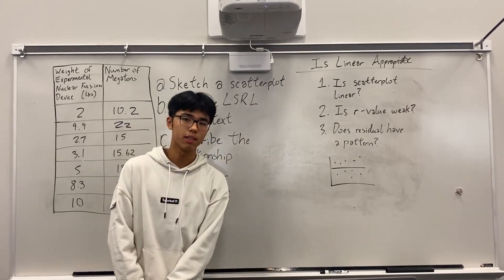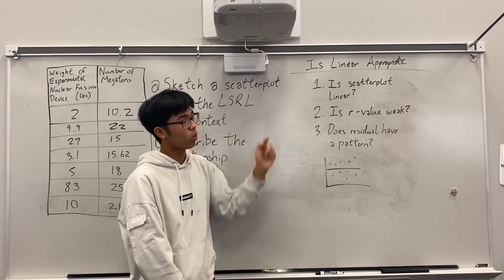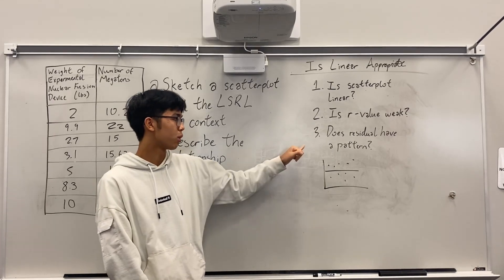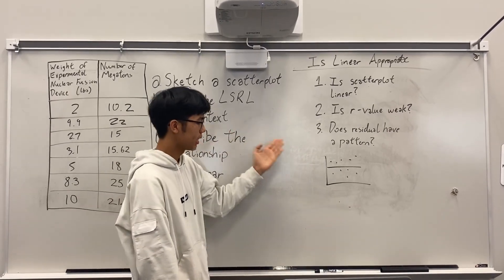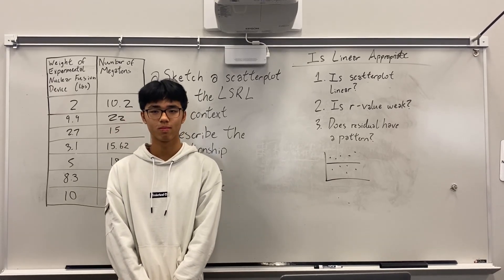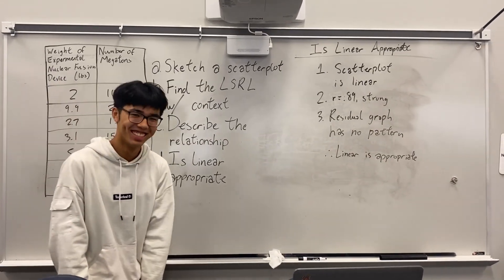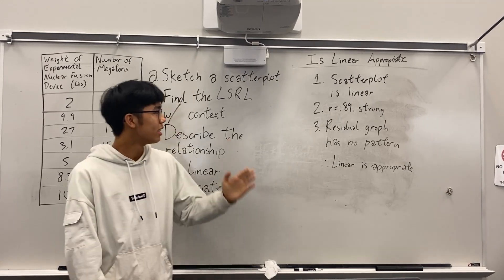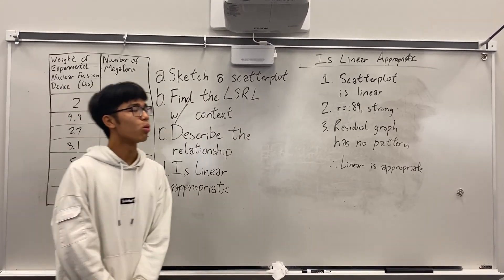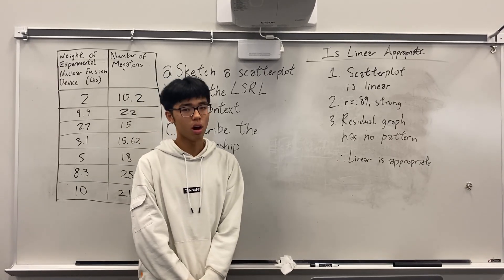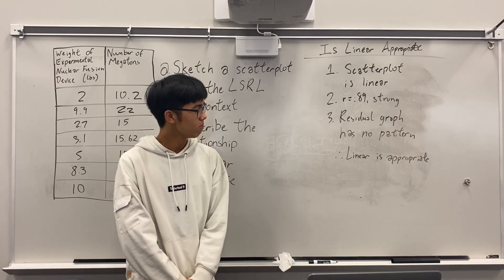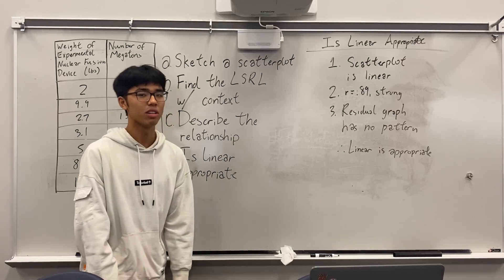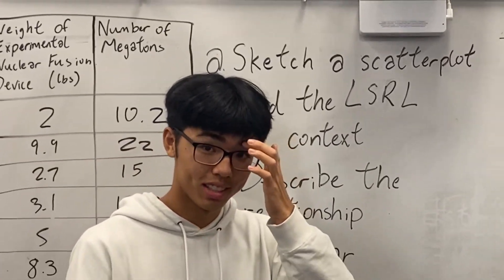This is the list to see if linear is appropriate. Number one: the scatterplot has to be linear. Number two: the R value has to be strong. Number three: the residual graph cannot have a pattern. This is an example of a graph that has no pattern. This is the answer to letter D. Number one: scatterplot is linear. Number two: R equals 0.89, which means it is strong. Number three: there is no pattern on the residual graph. The residual graph was given to you on your handout — I'm too lazy to draw it here, so just refer to your sheet. Therefore, linear is appropriate.